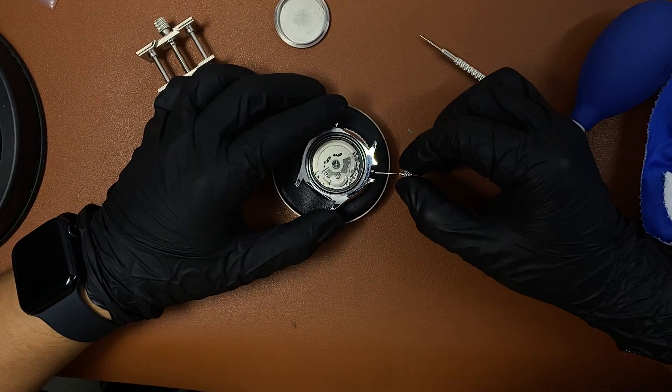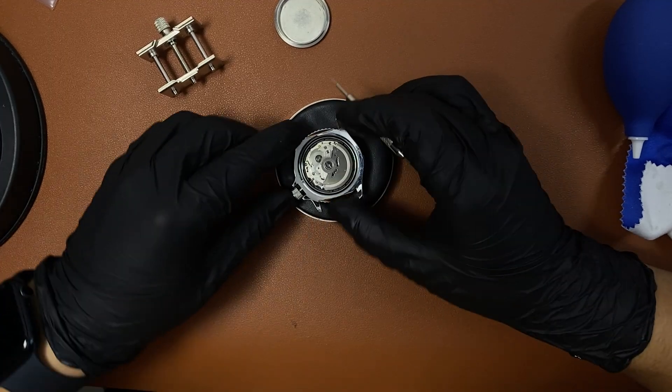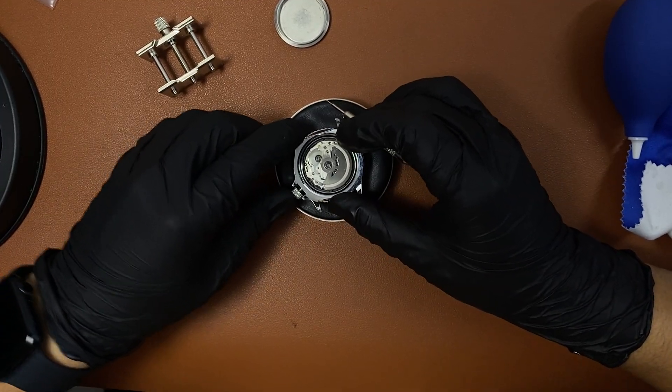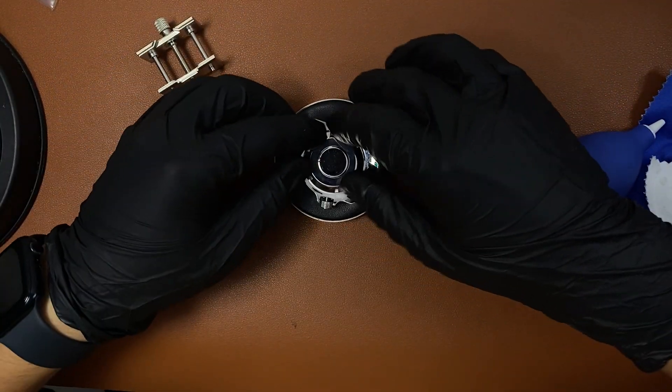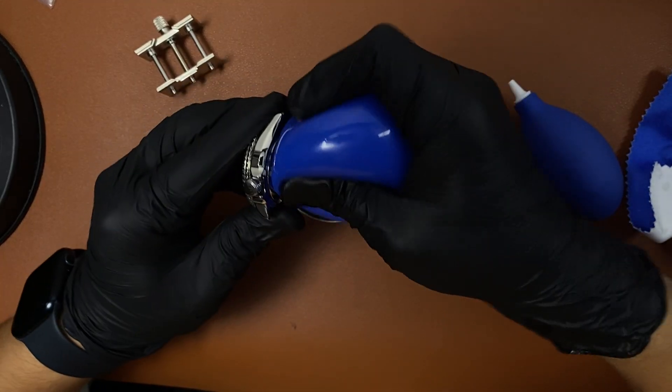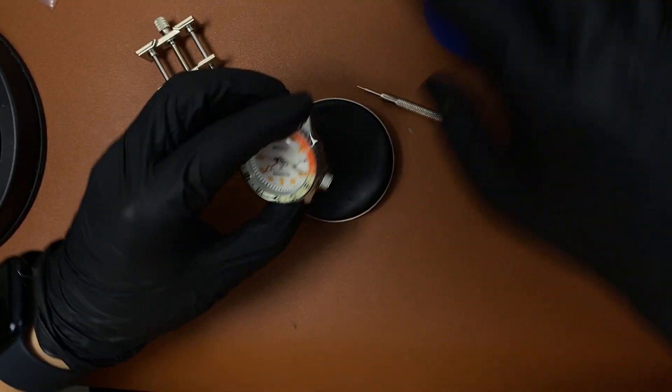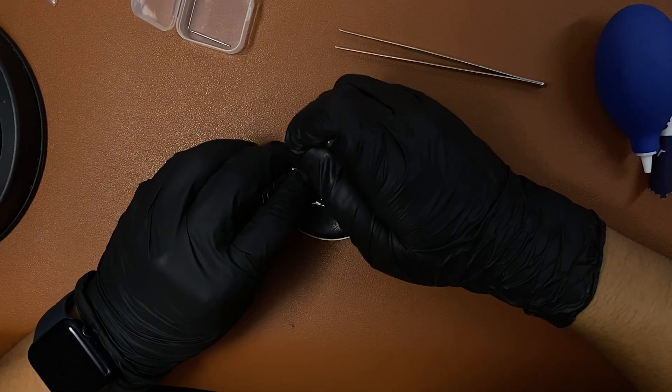Insert your stem. There's no need to cut the stem because I've cut it already. Make sure everything is installed correctly, give it a quick puff, and it's time to screw down the case. Twist it tight using the bow and your watch is done. Install back the bracelet.